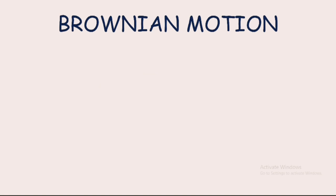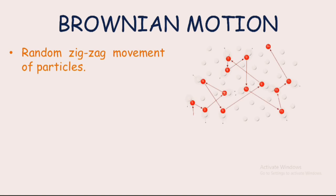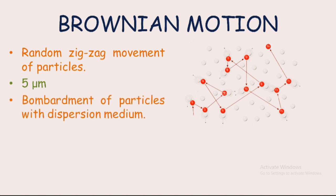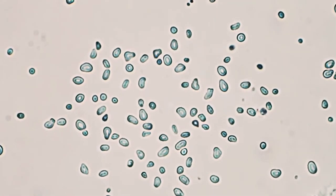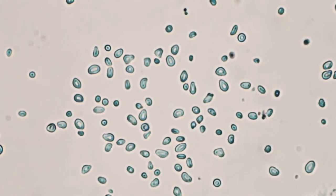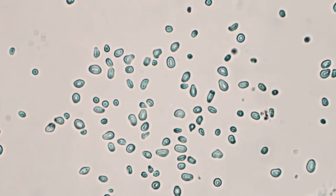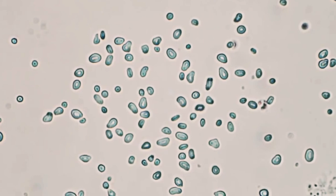The first property is Brownian motion. What is Brownian motion? It is the random zigzag movement of colloidal particles, which may be observed with particles as large as about 5 micrometers. It was explained as resulting from the bombardment of the particles by the molecules of the dispersion medium, as you can see in this clip.